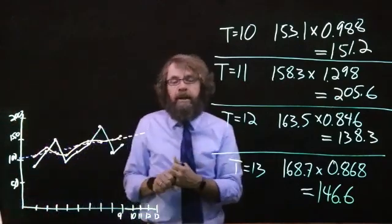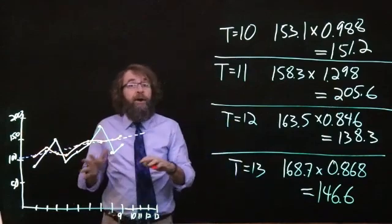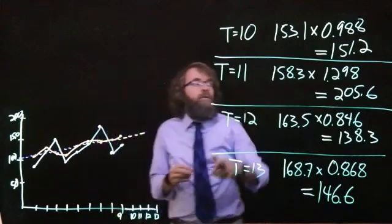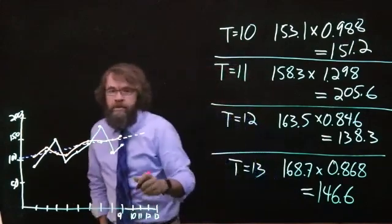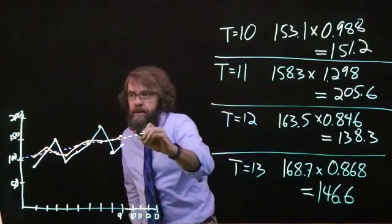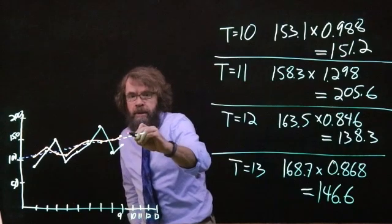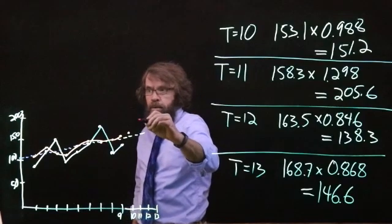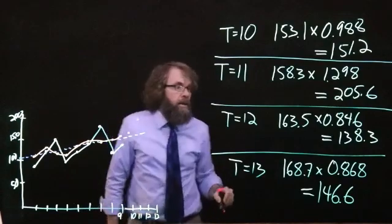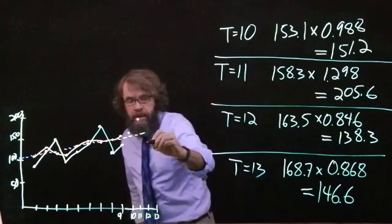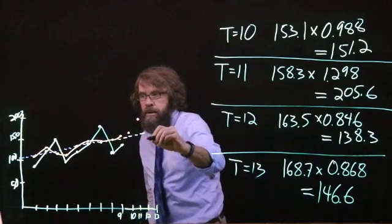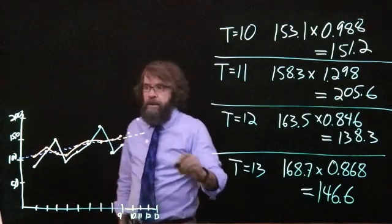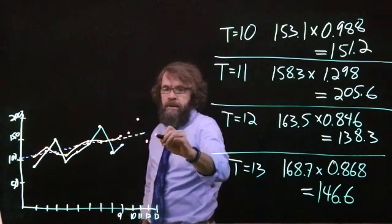I'm going to plot them on my graph of questionable accuracy. For period 10, we got 151, which looks like that. For period 11, we got 205, which looks like that. For period 12, we get 138, which looks like that. For period 13, we got 146, which looks like that.